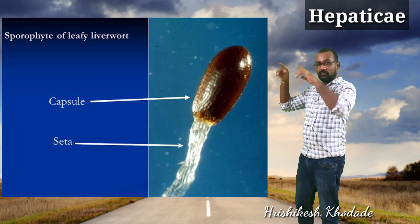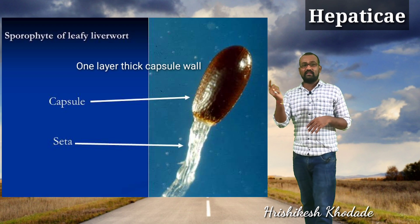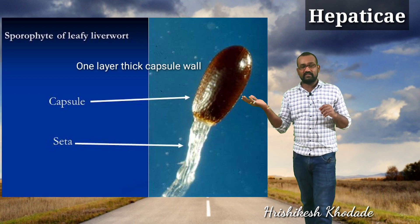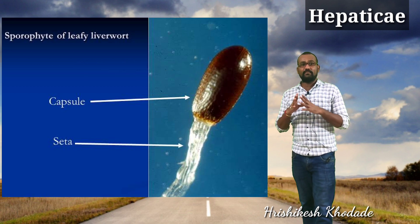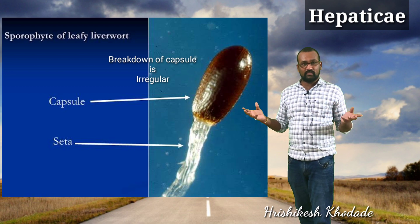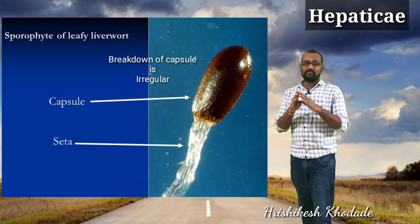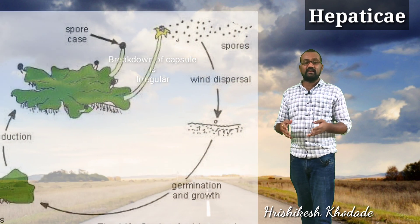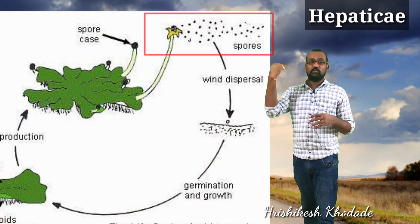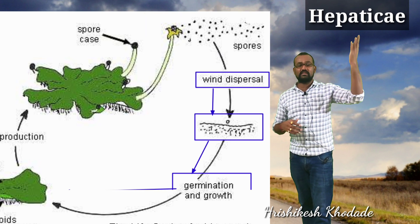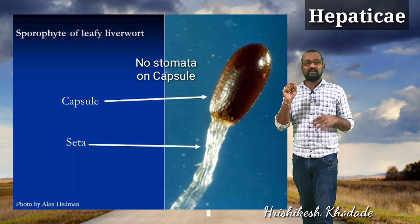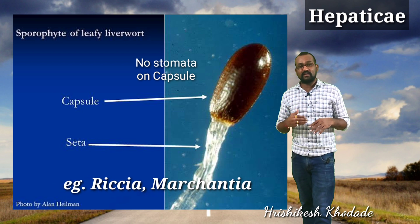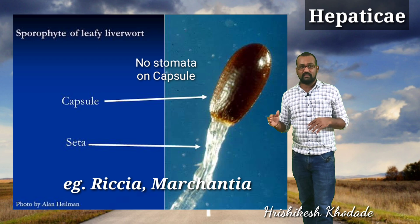The capsule wall — the covering structure of the sporophyte — is just one cell layer thick. If you take a transverse section of the sporophyte you will find the capsule wall is unicellular in thickness, and the breakdown fashion of this capsule is irregular — there is no particular method; it ruptures irregularly to release the spores. The spores then land and give rise to a new thallus. Also note: no stomata are present on the sporophyte in case of Hepaticae or liverworts.